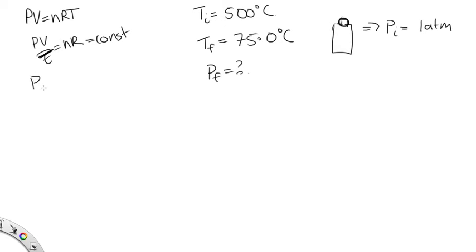So P initial V initial over T initial is equal to P final V final over T final. And we're told to assume that any expansion of the liquid or the bottle is negligible. So that tells us that the V initial and the V final are the same, so we can cancel them out. So the final pressure is equal to the initial pressure over the initial temperature times the final temperature.